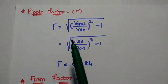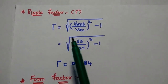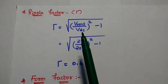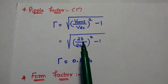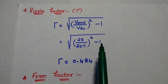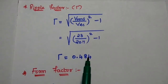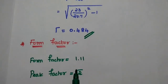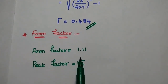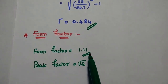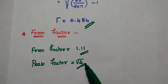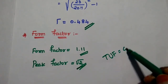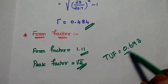Next is the ripple factor. Gamma = √((Vrms/Vdc)² − 1) = √((23/20.7)² − 1) = 0.484. The form factor for this full wave rectifier is always 1.11 and the peak factor is √2. Similarly, the transformer utilization factor TUF equals 0.693 for this full wave rectifier.